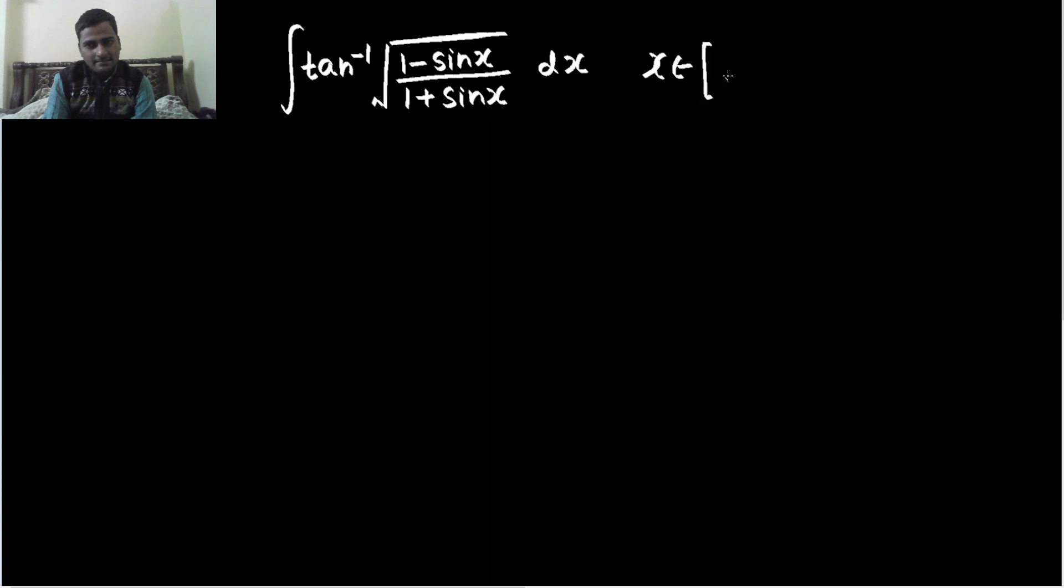Again, they have mentioned that your x is in this interval minus π/2 to π/2. Let's see how we can proceed with this. 1 minus sine x over 1 plus sine x. We don't have a direct formula, but we do have a formula for 1 plus cos x and 1 minus cos x.